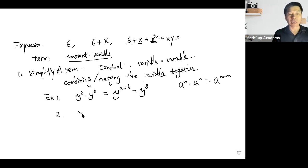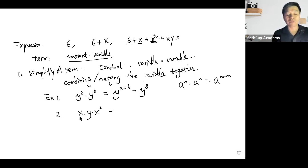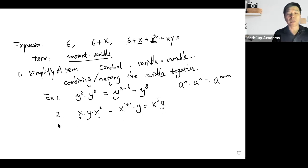Example two: how do we simplify the term x times y times x squared? Here we have two x's: one is x to the power 1 and the other is x squared, so we combine them — x to the power 1 plus 2 times y — which equals x cubed times y.